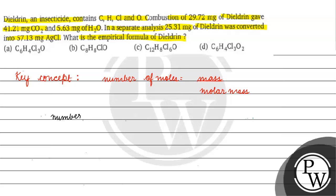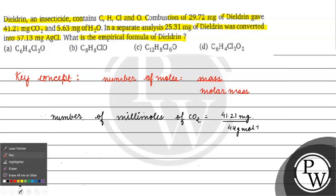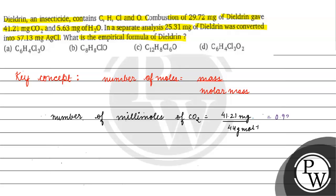Number of millimoles of carbon dioxide will be its mass, which is 41.21 mg, divided by its molar mass, which is 44 g/mol. This comes out to 0.9365 millimoles. And number of millimoles of carbon dioxide equals number of millimoles of carbon.